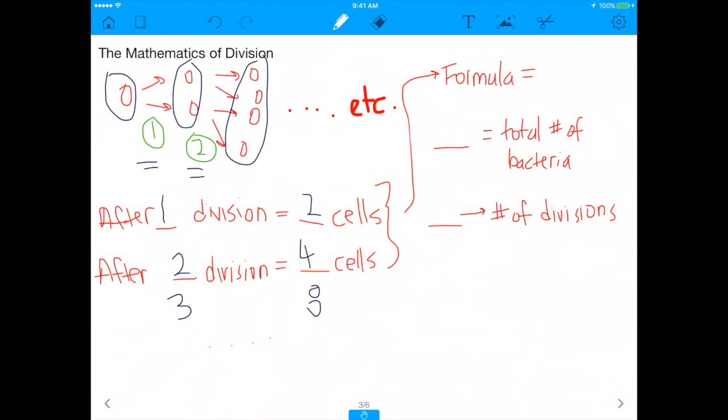But the formula that you're eventually going to get out is 2 to the nth, where n is the number of divisions. So if you wanted to find out the number of bacteria after a certain number of divisions, you'd do 2 to the n, and n would be number of divisions. So, you know, in this case, you'll see that if n is equal to 3, you get 8, n is equal to 4, you get whatever. You can keep doing that.